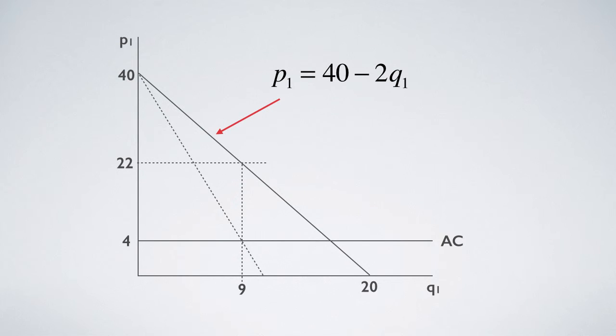When average or marginal cost is 4, the optimal price is determined by the intersection of this and the marginal revenue curve. For this example, price equal to 22 and quantity 9.